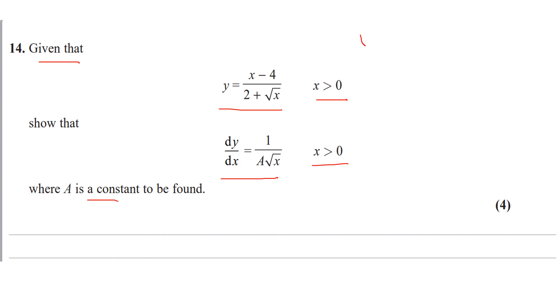So step 1: label u and v. So u equals the numerator, v equals the denominator. So u equals x minus 4, v equals 2 plus root x.